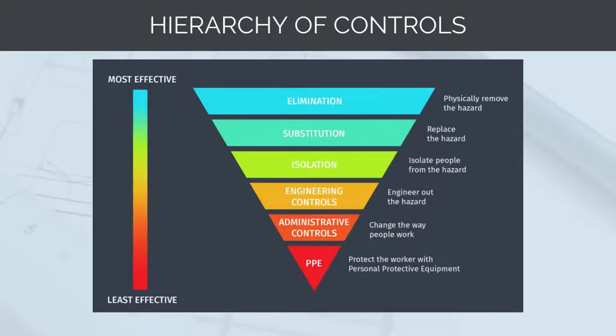We use the hierarchy of controls to categorise our controls and rank them from the highest levels of protection and reliability through to the lowest and least reliable forms of protection. The categories of controls are elimination, substitution, isolation, engineering, administrative, and PPE. These are ranked from most effective to least effective.